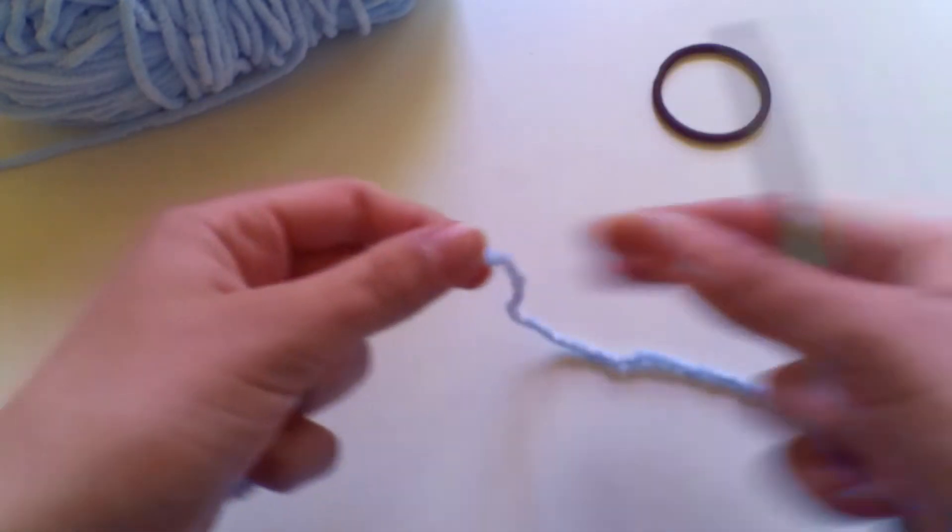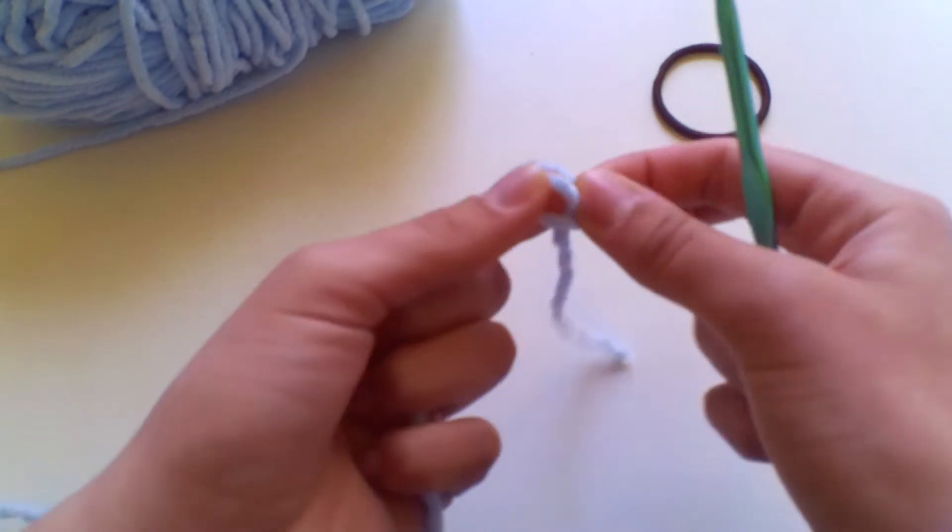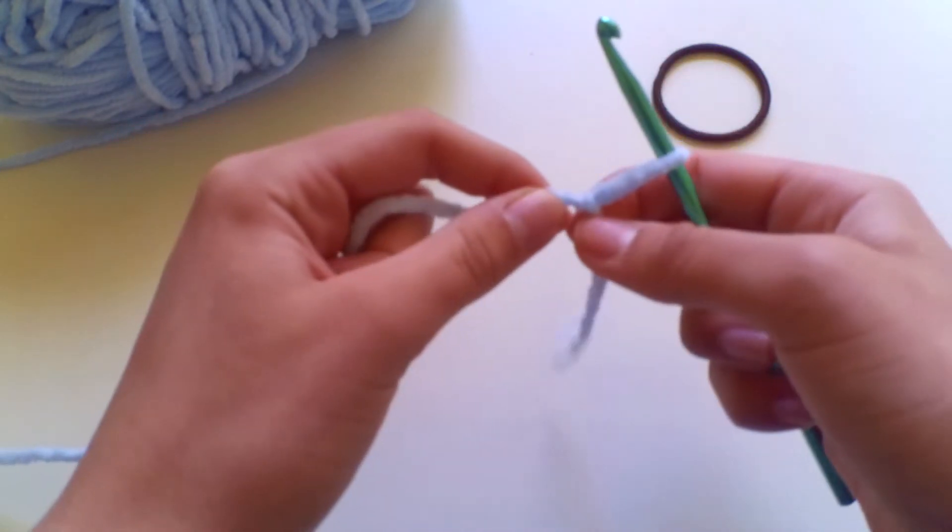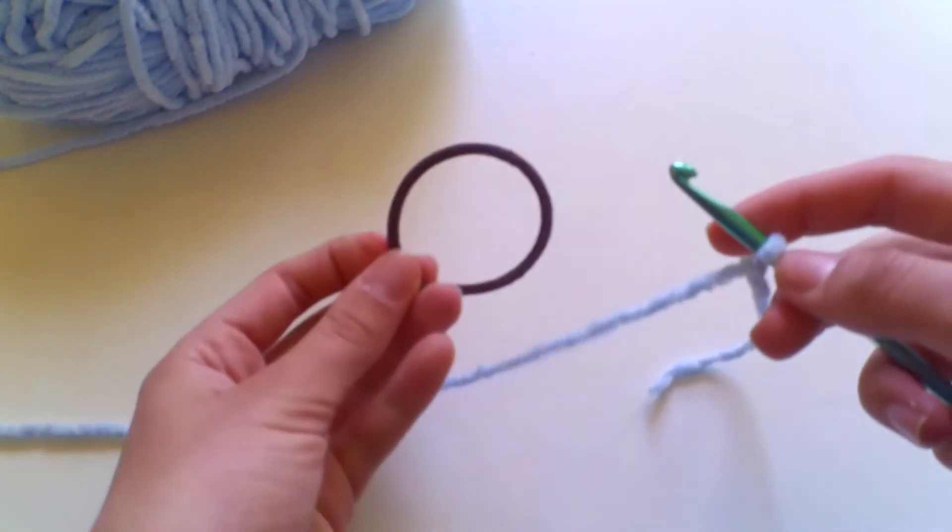Okay then so to begin your scrunchie you're going to make a slip knot just like how you begin most crochet projects. Insert your hook into your loop and pull through and now you can introduce your bobble.